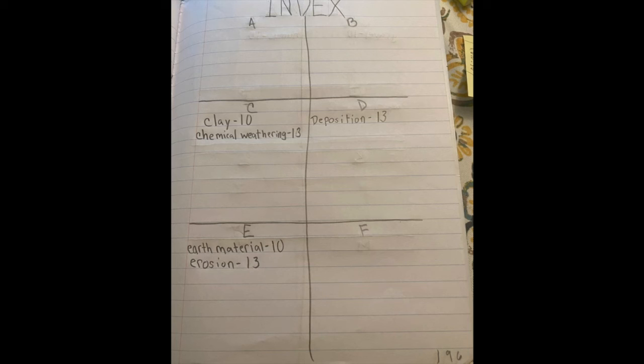And we know that clay definition is on page 10 and chemical weathering is on page 13. The same for deposition, earth materials, and erosion. We want to put each word in the letter that it starts with, with its page number. If page 196 does not look like that, please update your page now.